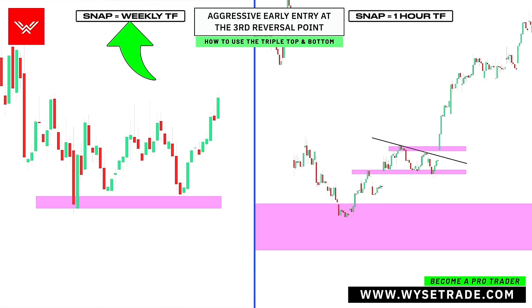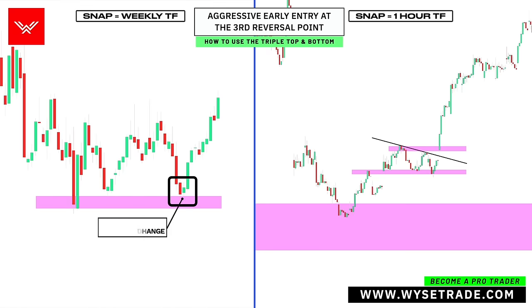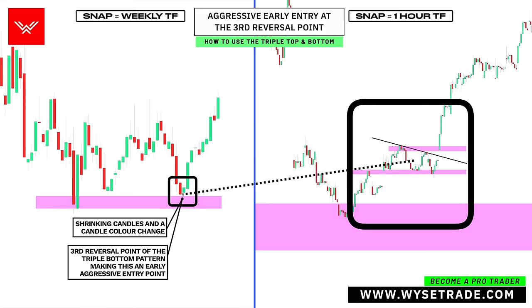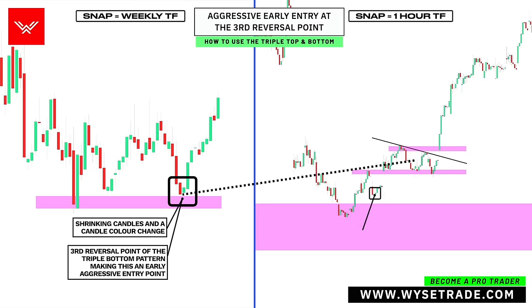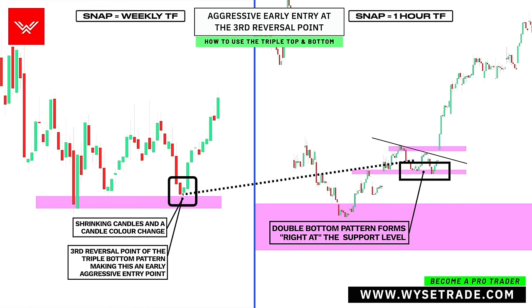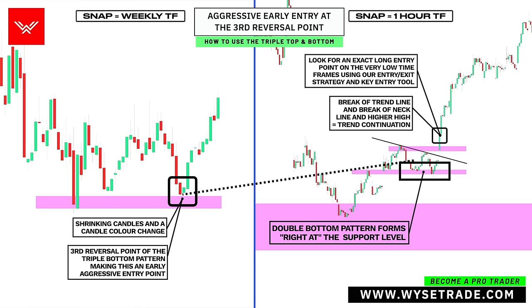On the left is the Snapchat stock weekly timeframe. These reversal points here give you your key support level, which is also a swing low. As price comes back down, you add shrinking candles and a candle color change. This is also the third reversal point of the triple bottom pattern, making this an aggressive early entry. When you look inside of the third reversal point but on the one hour timeframe on the right, you add a trend change pattern through the higher low and higher high, and through the double bottom pattern at support, followed by a break of trendline or break of neckline and higher high. This is then when you would go to the even lower intraday timeframes to find an exact entry point.